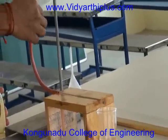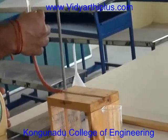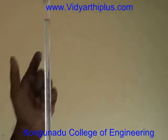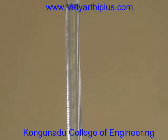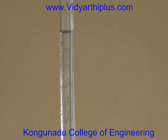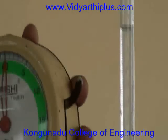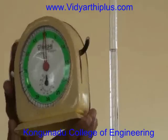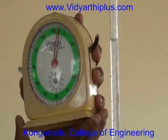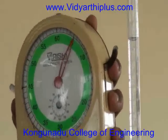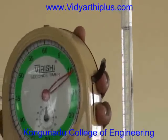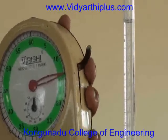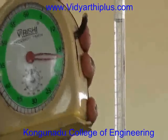The burette tap is first opened, and when the water level reaches zero, the stop clock is started at that instant. For each 5 ml, we have to note down the time, and these readings are tabulated. Up to 50 ml, we have to note down these readings in the tabulation.